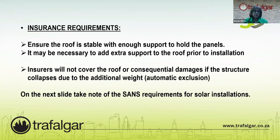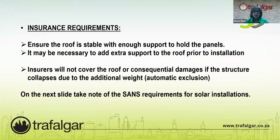Blighty: In terms of body corporate or building insurance, it's important — as Ed said earlier — to ensure the roof is stable with enough support to hold the panels. It may be necessary to add extra support to the roof prior to installation. Insurers will not cover any damages to the roof or consequential damages if the structure collapses due to the additional weight. It becomes an automatic exclusion because the necessary precautions were not taken to ensure the stability of the roof and structure, and panels are quite heavy.